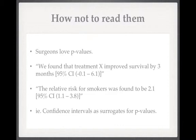I want to focus on an example of how we shouldn't really be reading confidence intervals. Surgeons love p-values, and I think one of the reasons is that they make things black and white. If the p-value is less than 0.05 then we have hit a statistically significant result, whereas if the p-value is greater than 0.05, the result tells us nothing — or at least that's the way we're tempted to think. Suppose you're reading a paper and you read: 'We found that treatment X improves survival by three months; 95% confidence interval runs from minus 0.1 to 6.1.' You might be tempted to say the confidence interval crosses zero and therefore the result is not statistically significant. It's certainly true the p-value for this would be greater than 0.05, however if that's all we get from this confidence interval, then we've missed all of that information.